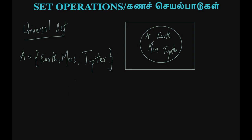Universal Set is denoted by U. In our example, we have a square representing the Universal Set. We are having a conversation about the planets of the solar system, so the Universal Set is all the planets: Earth, Mars, Jupiter, Saturn, Mercury, Uranus, Neptune, Venus.